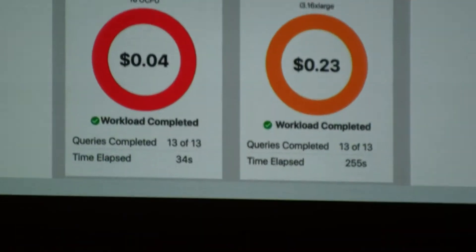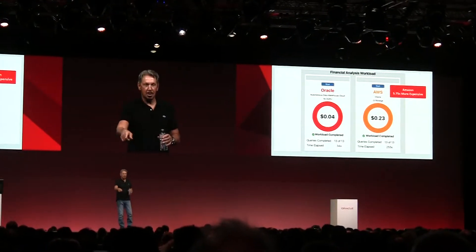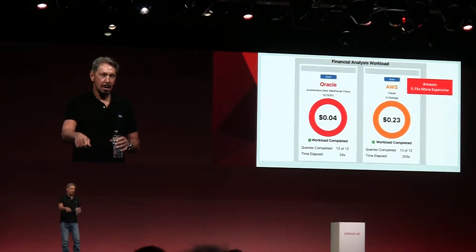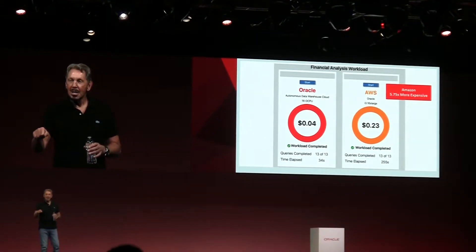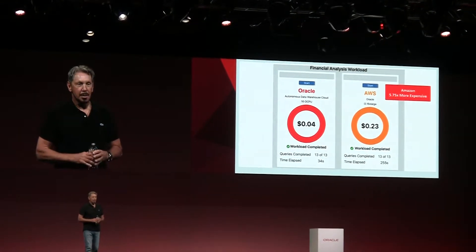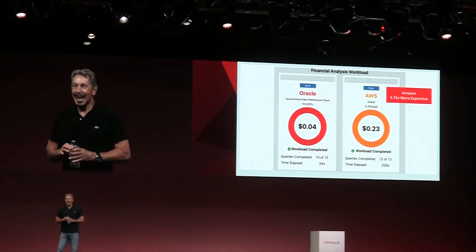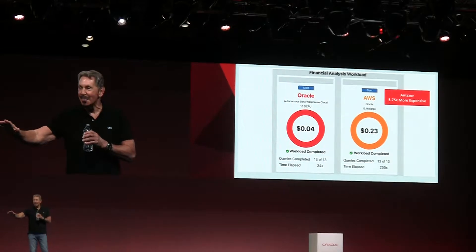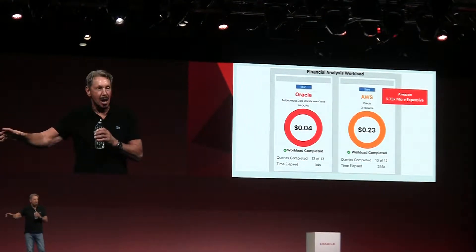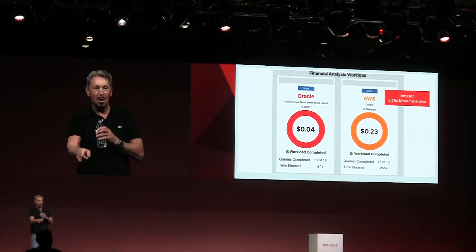But forget the speed. Who cares? Your Amazon bill is 23 cents. Your Oracle bill is 4 cents. You're going to pay Amazon almost six times more to do the same work. And by the way, you don't get 99.995% availability, you get no RAC, you get lots of downtime, lots of human labor. This is just your Amazon bill versus your Oracle bill.